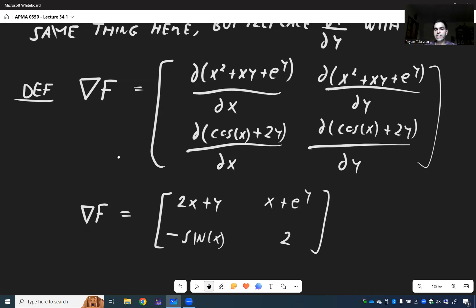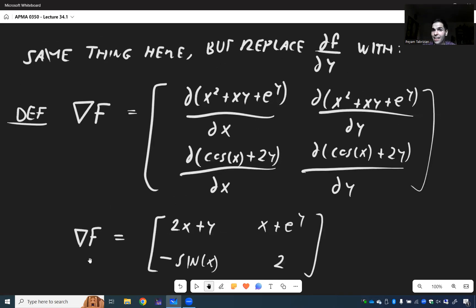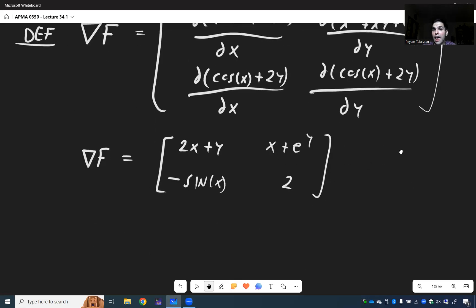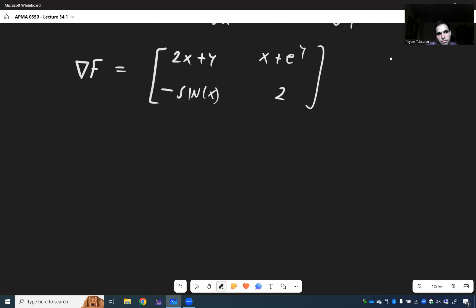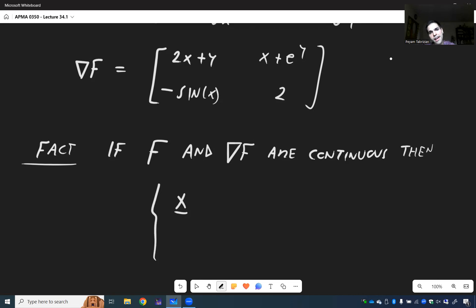And the question is, what is the criterion? Same thing: if your function and that gradient are continuous, then we do have a unique solution. So the fact is, if f and this matrix are continuous—by the way, the matrix being continuous means each component is continuous—then we have a unique solution.